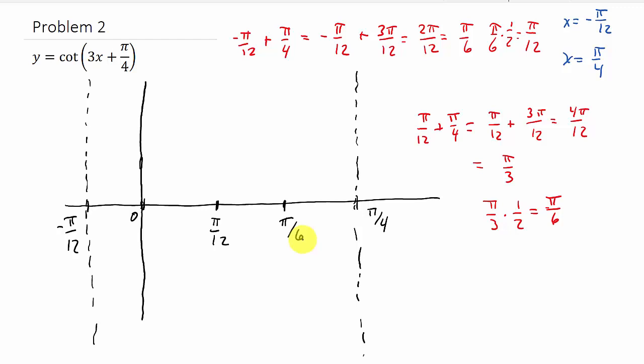Alright, so now we know that cotangent starts out at 1. And then it goes to 0. And then it goes to negative 1. And since we don't have a number multiplied in front of cotangent, we know it's going to be 1, 0, negative 1. Alright, so here's my vertical asymptotes. And here's the critical points I've found. 0, π over 12, and π over 6. So we know cotangent starts out at 1. And then it goes to 0. And then it goes to negative 1.